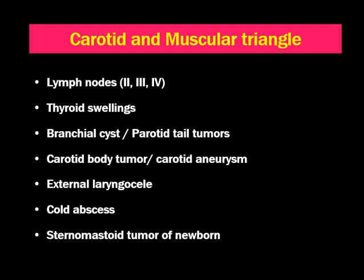Thyroid swellings are the second most common swellings in the lateral neck in the carotid and muscular triangle. The thyroid swelling may be either unilateral enlargement, solitary thyroid nodule, or may be part of a multinodular goiter, and may be benign or a malignant swelling. Branchial cyst and parotid tail tumors also present in the carotid and muscular triangle, basically in the carotid triangle in the upper neck.